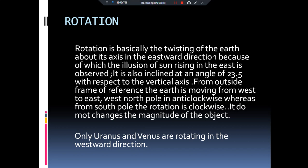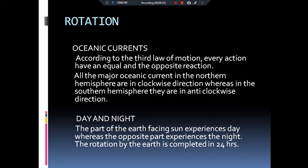Our earth is rotating in the eastward direction — that's why the sun rises in the east and sets in the west. But if we go to Venus, which is known as the twin sister of the earth, the sun would rise in the west and set in the east. Because of rotation, many phenomena occur — for example, oceanic currents. According to Newton's third law of motion, every action has an equal and opposite reaction.